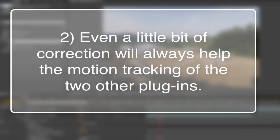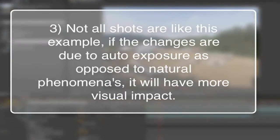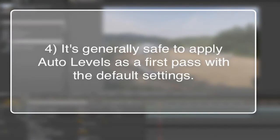Even a little bit of correction will always help the motion tracking of the other two plugins. Not all shots are like this example — if the changes are due to Auto Exposure as opposed to natural phenomena, it will have more of a visual impact. It's generally safe to apply Auto Levels as a first pass with the default settings.